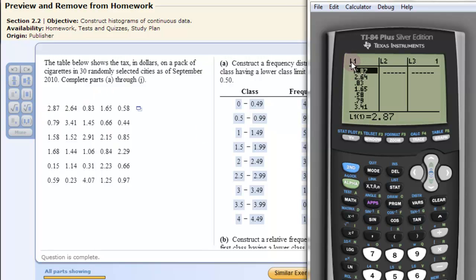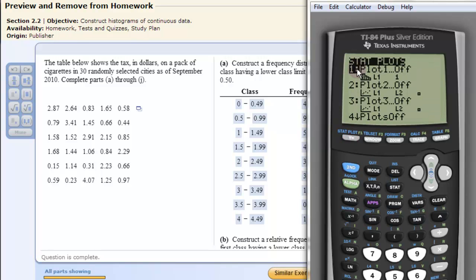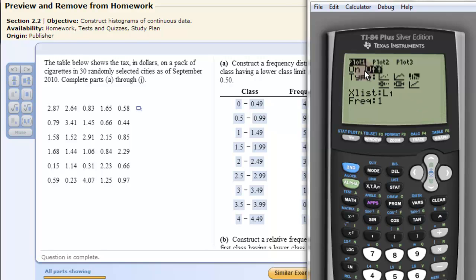Now that we have this all entered in here we need to go to the stat plot area. So I click second stat plot. I hit enter with the first one highlighted. The rest of these should all be off. I click enter to turn this one on. Only this one should be highlighted with on.